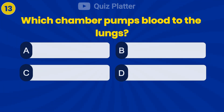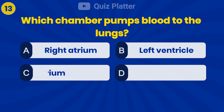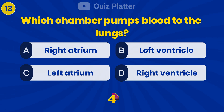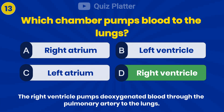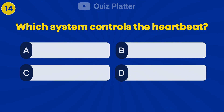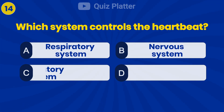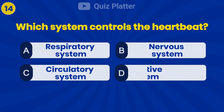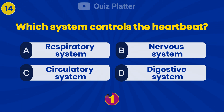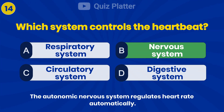Which chamber pumps blood to the lungs? Answer D: Right ventricle. Which system controls the heartbeat? Answer B: Nervous system.